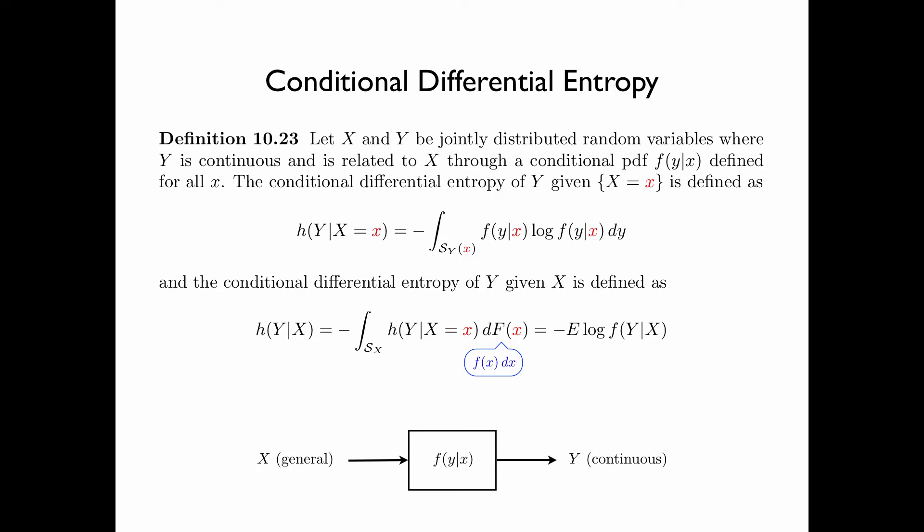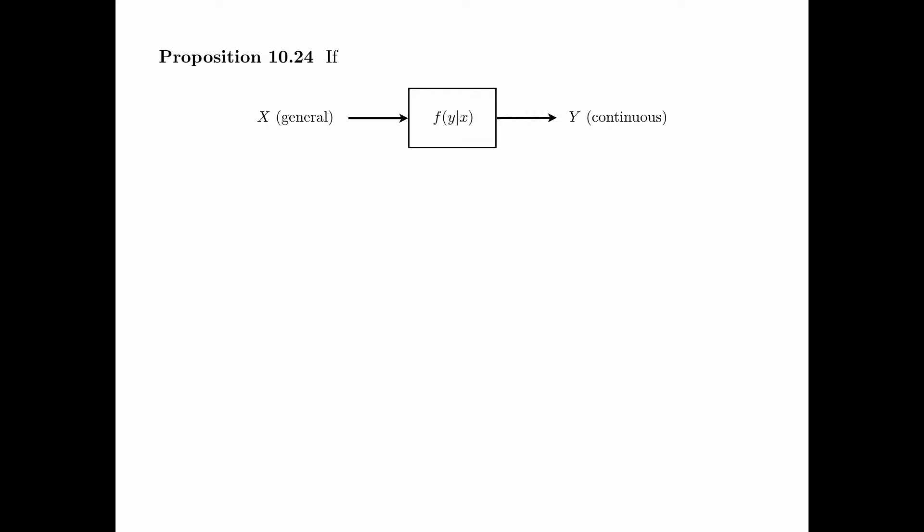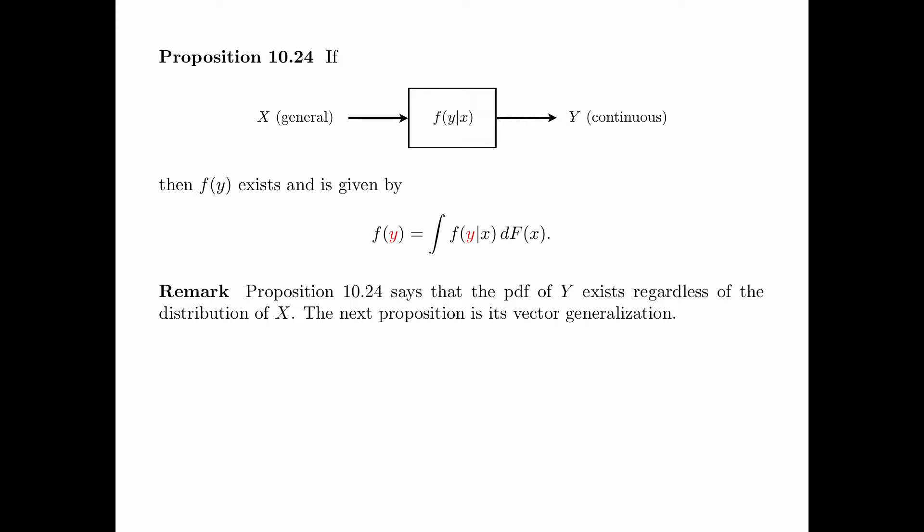For those of you who are not familiar with measure theory, you can think of dF(x) as f(x)dx, while keeping in mind that x can have a general distribution. Proposition 10.24 says that if y is related to x through a conditional PDF f(y|x), then the density function of y exists and is given by integrating f(y|x) dF(x). This proposition says that the PDF of y exists regardless of the distribution of x.